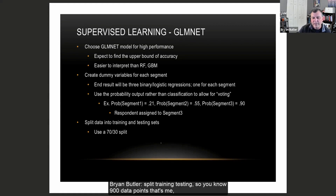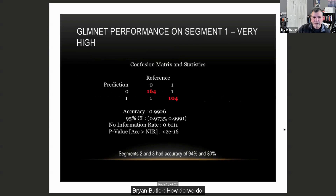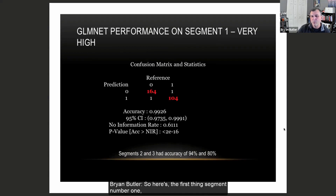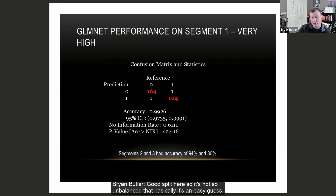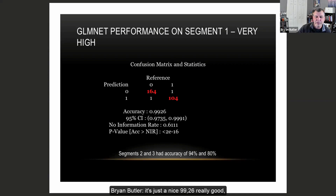Standard train-test split: 900 data points gives me about 250 for testing and 650 for training. It's not great, it's not bad. Segment number one: the elastic net regression came back near perfect — very little false positives or false negatives, a good split so it's not so unbalanced that it's an easy guess. 99.26% accuracy. Really good.